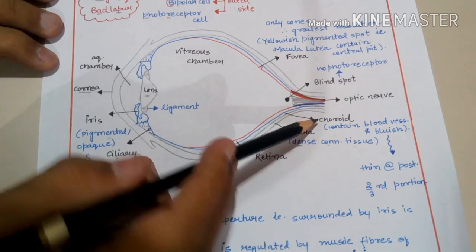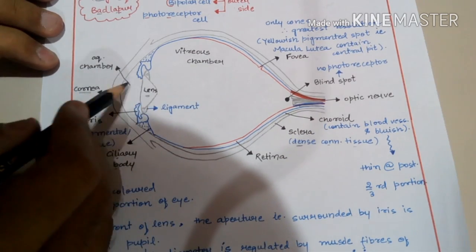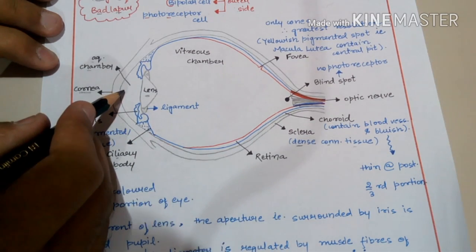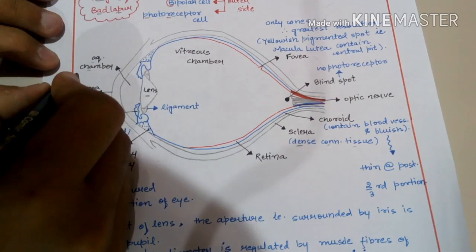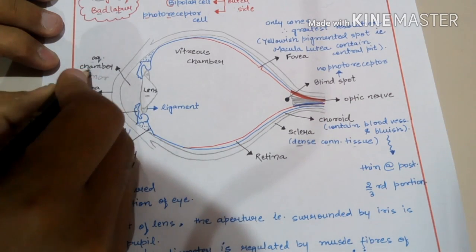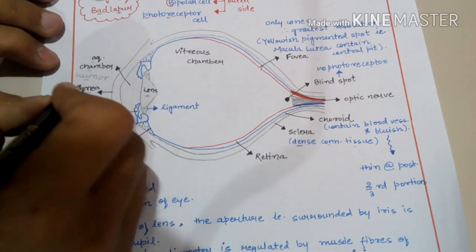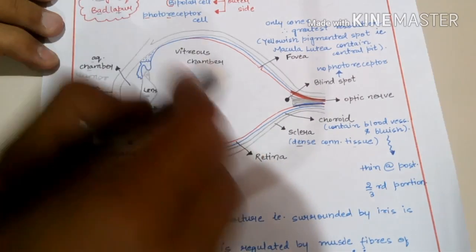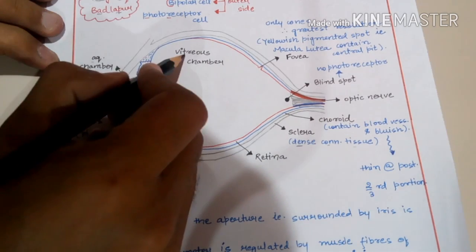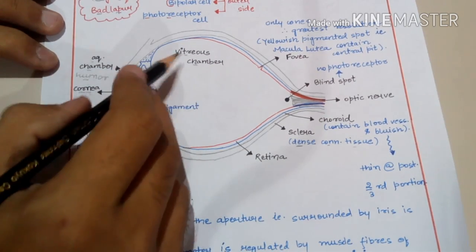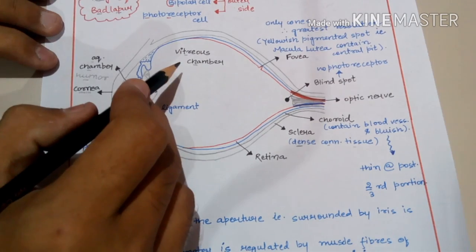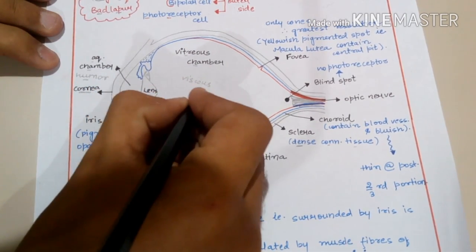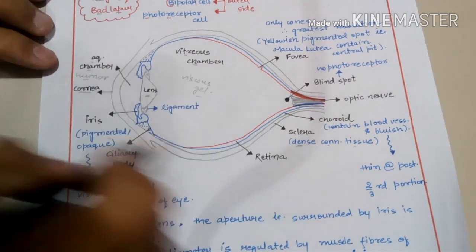Between the lens and the cornea is an aqueous chamber, filled with a watery fluid known as aqueous humor. Behind the lens is the vitreous chamber, which is filled with vitreous fluid — a viscous, gel-like fluid.